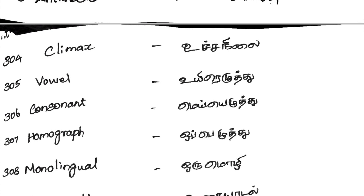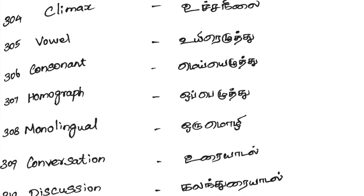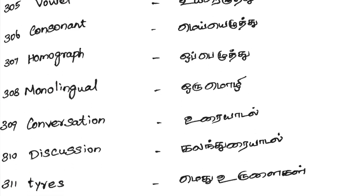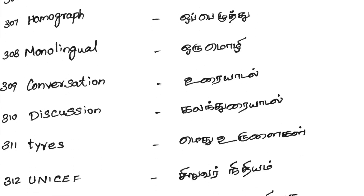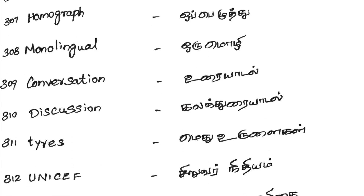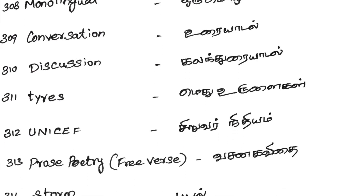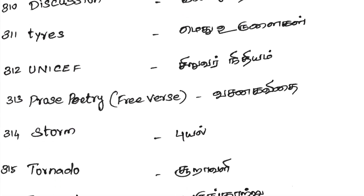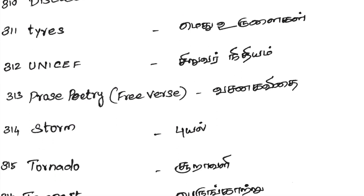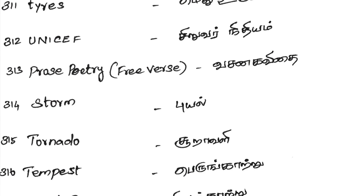Consonant. Homograph. Monolingual — Ormoli. Conversation. Discussion — Kalanthuray. Tias. UNICEF Silver. Prosperity — that is free words.